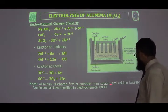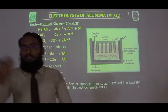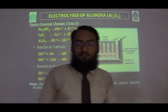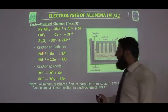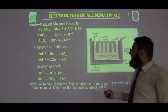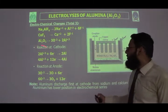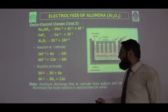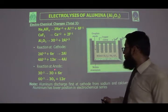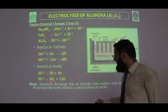At the cathode, aluminium is discharged preferentially over sodium and calcium because aluminium has a lower position in the electrochemical series. Aluminium ions gain 3 electrons to form neutral aluminium atoms: Al³⁺ + 3e⁻ → Al. At the anode, oxygen ions lose electrons to form oxygen gas.